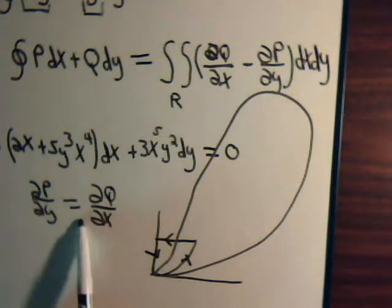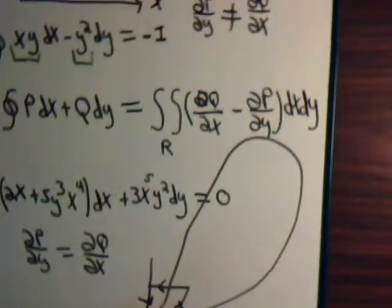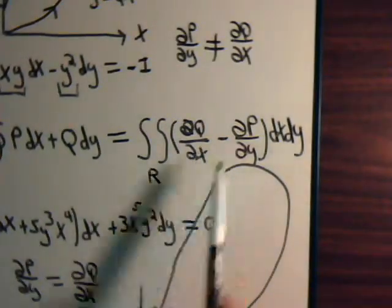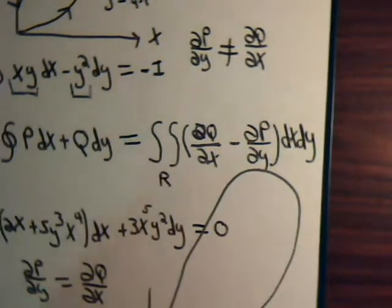Because these are equal, that's what determines exactness, as we saw in the previous video. Therefore, these are zero, so this double integral is always zero by Green's theorem, and this is always zero.